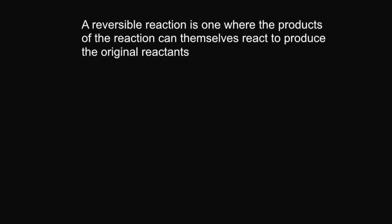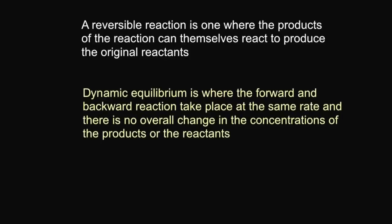A reversible reaction is one where the products of the reaction can themselves react to produce the original reactants. If a reversible reaction takes place in a closed system — that means where none of the products or the reactants can escape — then the reaction will reach equilibrium. A very common exam question is to ask you to define dynamic equilibrium. This is where the forward and backward reaction take place at the same rate.